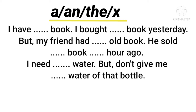The first sentence: 'I have ___ book.' Here, 'book' begins with a consonant sound — 'buh, book' — so we would use 'a'. I have a book. I bought a book yesterday.